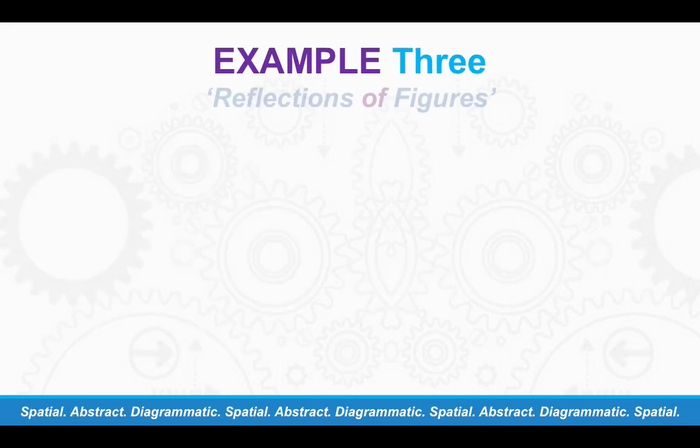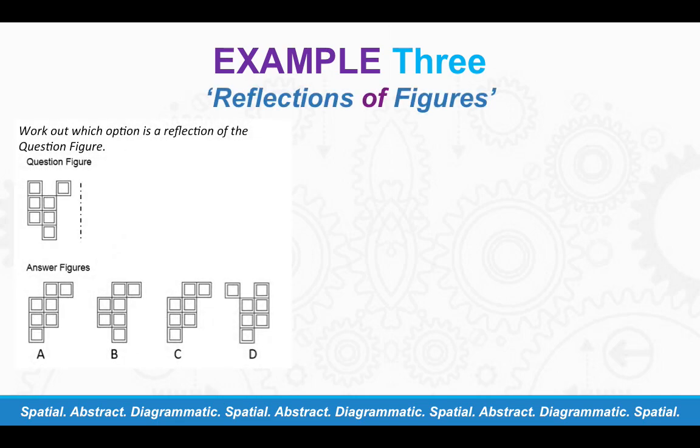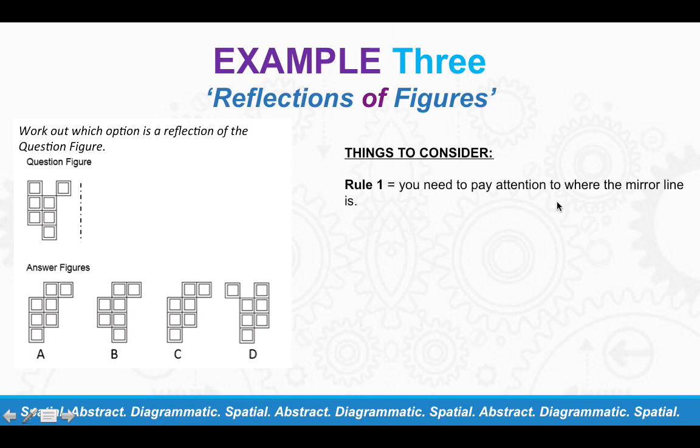Example three, which is reflections of figures. And the question is, work out which option is a reflection of the question figure. So using this line here as your mirror, so you know it's going to be reflected like so. So from downwards, you're not reflecting horizontally. So things to consider for this question. So you need to pay attention to where the mirror line is, which is what I've just told you.